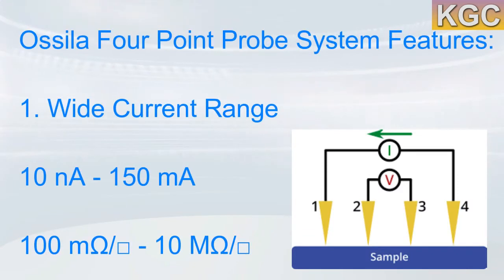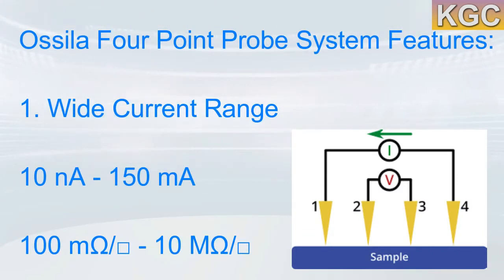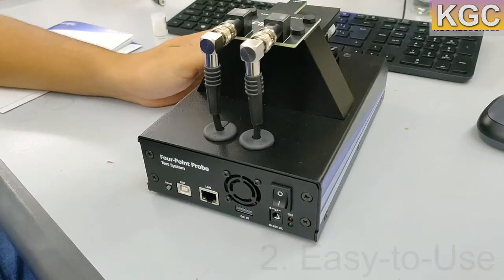Features. 1. Wide current range. The 4-point probe is capable of delivering currents between 10 nanoampers and 150 milliampers, and can measure voltages from as low as 100 microvolts up to 10 volts. The system can measure sheet resistances in the range of 100 milli-ohm per unit to 10 mega-ohm per unit, enabling the characterization of a wide range of materials.